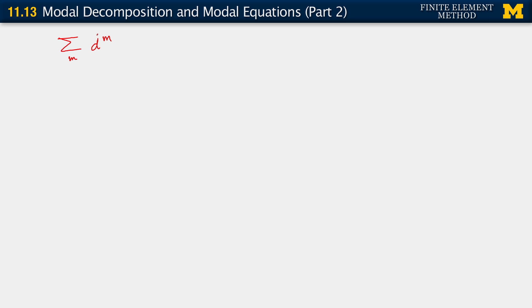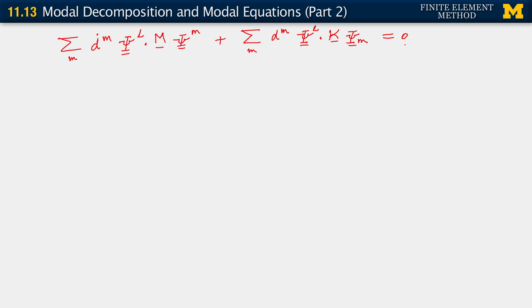We know how this works out. For the first term, sum over m: d_m_dot times psi_l dot M psi_m, plus sum over m d_m times psi_l dot K psi_m equals 0. Now this we know from the orthonormality condition is delta_lm.